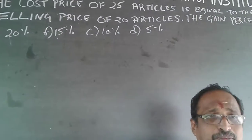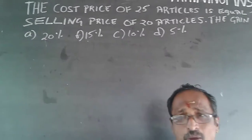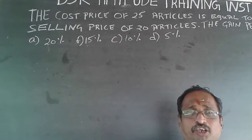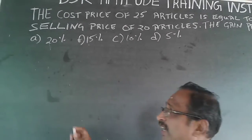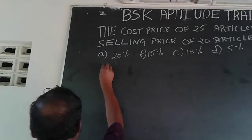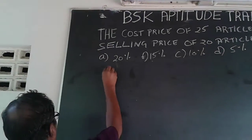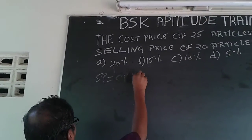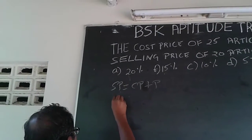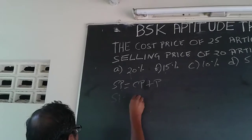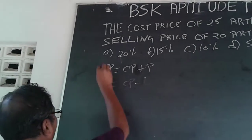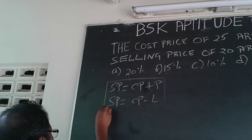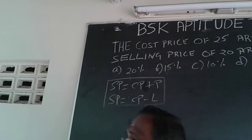This is a cost price and selling price problem, also known as profit and loss. The key formula is: selling price will always be equal to cost price plus profit in case you make a profit, and selling price will be equal to cost price minus loss in case you make a loss. This is the foundation for all cost price and selling price problems.